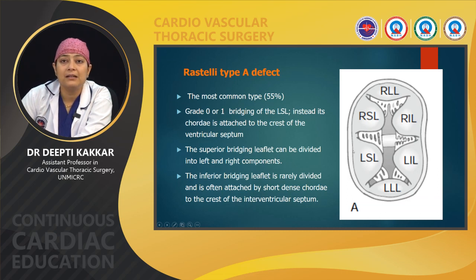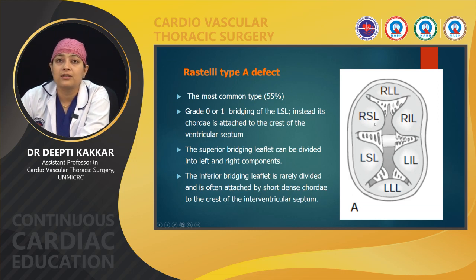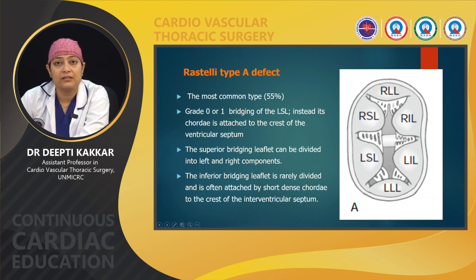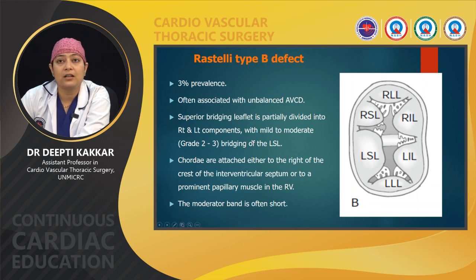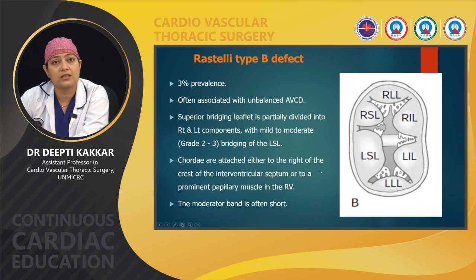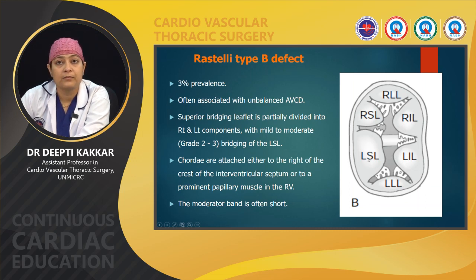Rastelli Type B is a very rare defect of complete AVCD, often associated with unbalanced AVCD. Here the superior bridging leaflet is partially divided into right and left components and there is mild (grade 2 to 3) bridging of the left superior leaflet. The chordae may be attached to either the right side of the interventricular septum or to a prominent papillary muscle on the RV side. The moderator band is also often short.